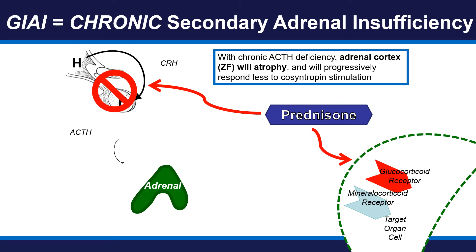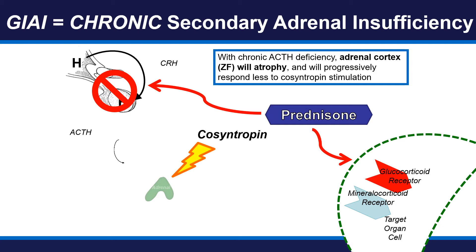Let's examine what is happening when someone is taking supraphysiological prednisone. Prednisone acts at the level of the glucocorticoid receptor, and as long as a patient is taking prednisone, symptoms of adrenal insufficiency would not develop. At the same time, through a negative feedback mechanism at the level of the hypothalamus and pituitary gland, excessive amounts of prednisone suppress CRH production and in turn ACTH production. This leads to adrenal cortical atrophy, poor response to cosyntropin, and no endogenous adrenal cortisol production.